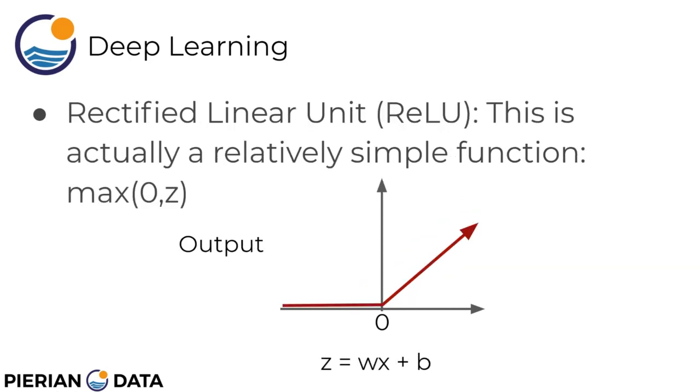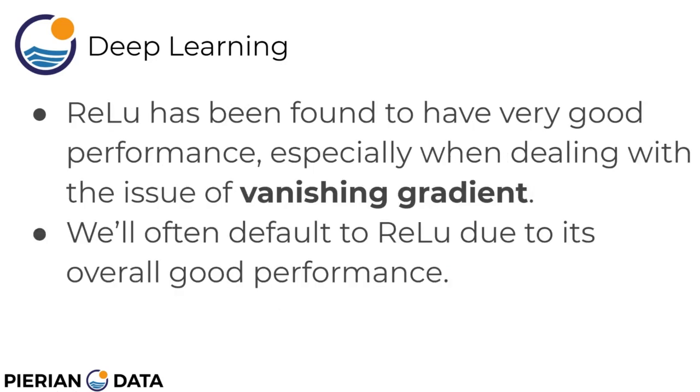Another really common option is the rectified linear unit, shortened to ReLU. This is a really relatively simple function. Basically you can describe it as max of 0 comma z, which essentially states that if the output of the value is less than 0 we treat it as 0. Otherwise if it's greater than 0 we go ahead and output the actual z value. Rectified linear units have been found to have very good performance, especially when dealing with the issue of vanishing gradient, which is a term and issue we'll discuss in more detail in a future lecture. Because it's so common to use rectified linear units, we're often going to default to a rectified linear unit as our activation function due to its overall good performance.